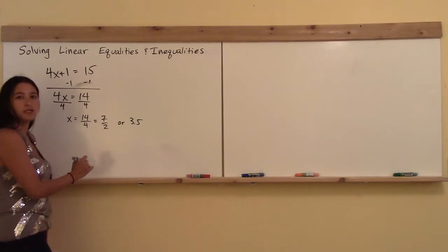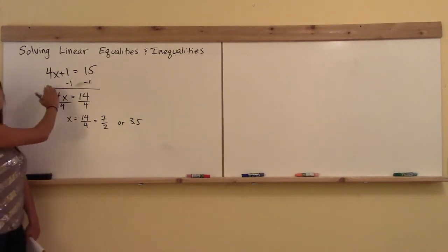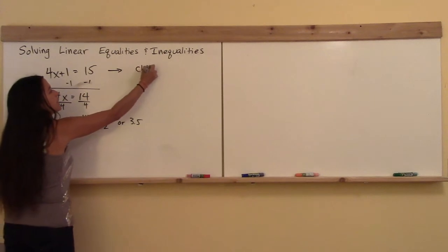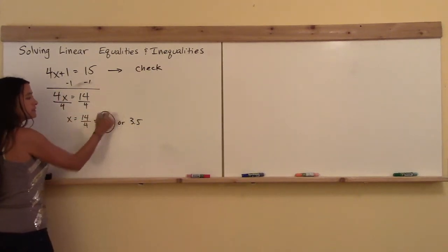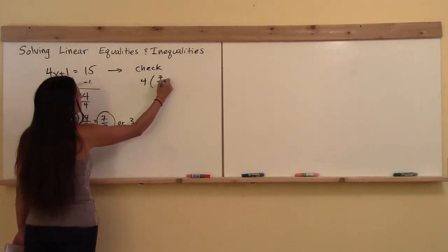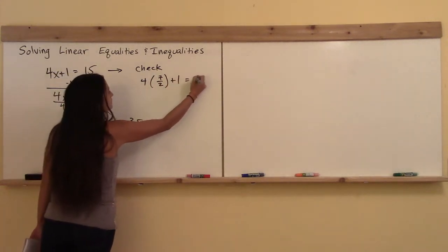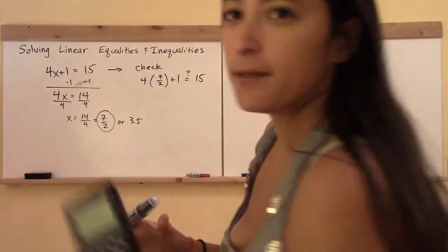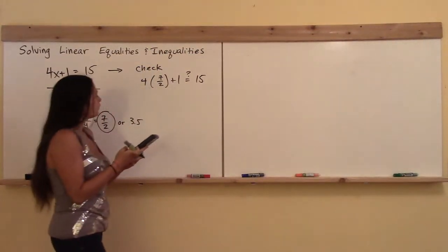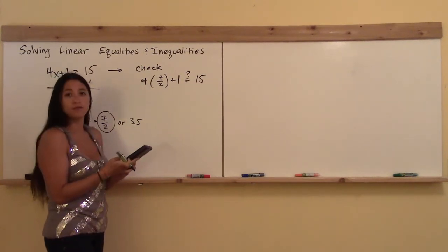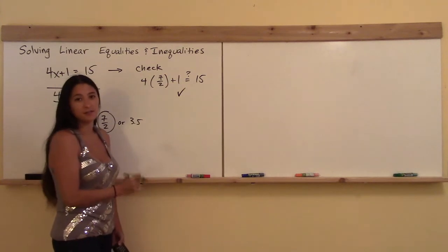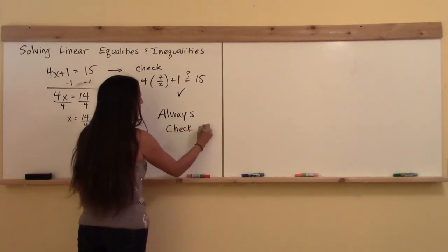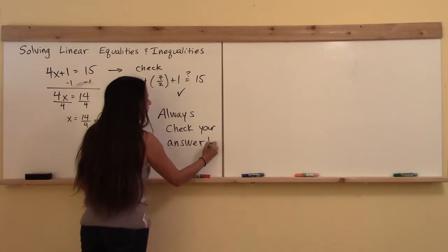We got the answer that x was equal to 7 over 2. We're going to take the original statement, which said that 4x plus 1 is equal to 15, and perform a check by plugging in the value we got. Ask your calculator: is 4 times 7 over 2 plus 1 equal to 15? Did you bring your calculator? I got mine right here. Type it in — is 4 times 7 over 2 plus 1 equal to 15? Yes, it sure is. So I know I got the right answer. I want you to always check your work. I'll always check your answer if at all possible.